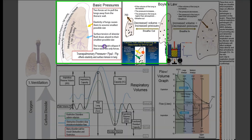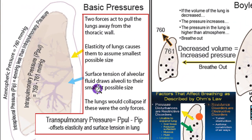The first thing we need to come back to is the basic pressures, and there are four basic pressures you need to understand. The first one is atmospheric pressure — that's the pressure of the air around us, which generally adds up to 760 millimeters of mercury, and that's a combination of nitrogen, oxygen, carbon dioxide, and water. Both blood pressure and air pressure are expressed in millimeters of mercury.